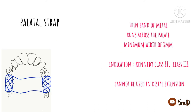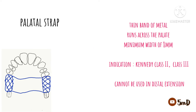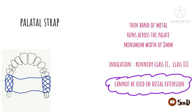Next we have the palatal strap. It is a wide thin band of metal running across the palate from one side of the arch to the other. It needs a minimum width of 8 mm so that it can derive the essential palatal support. It can be used in Class 2 and Class 3 situations, but for Class 1 it is not sufficient.